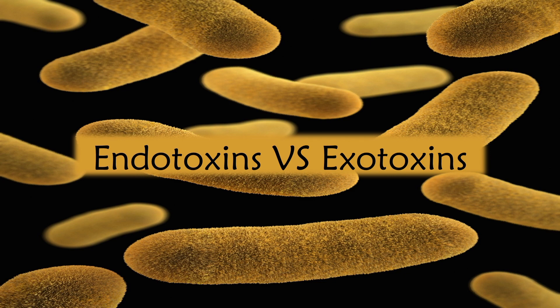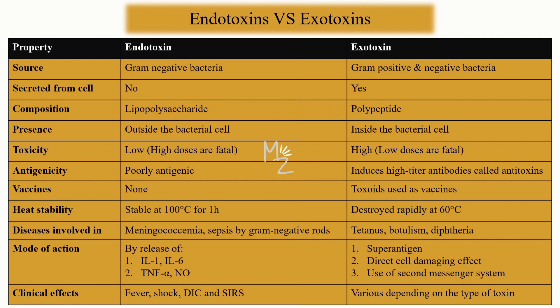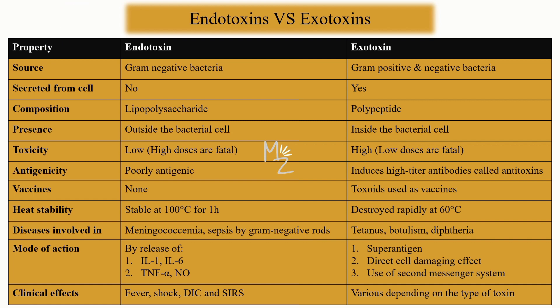Have a cup of tea and let's get started. You can see a table right in front of you — it has three columns. In the most left one there are some properties of both the endotoxins and exotoxins. We'll talk about which property is different. Let's start with the source.